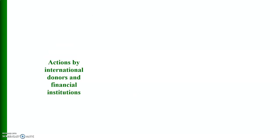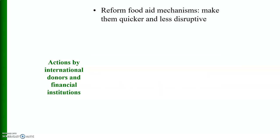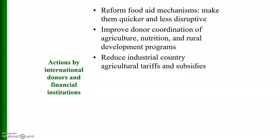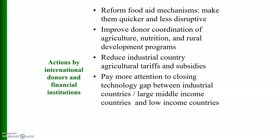Actions by international donors and financial institutions should include: reforming food aid mechanisms to make them quicker and less disruptive; improving donor coordination of agriculture, nutrition, and rural development programs; reducing industrial country agricultural tariffs and subsidies; and paying more attention to closing the technology gap between industrial countries, large middle-income countries, and low-income countries — though this is a very challenging and uphill task.